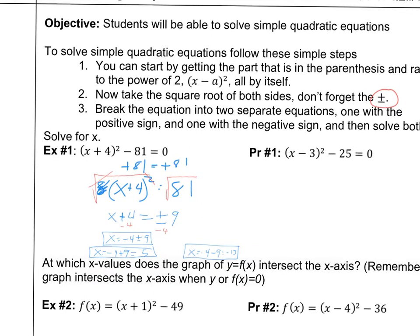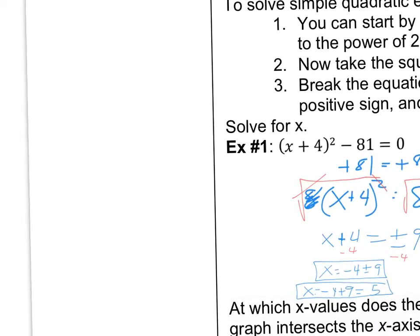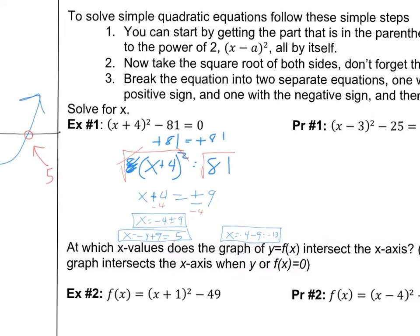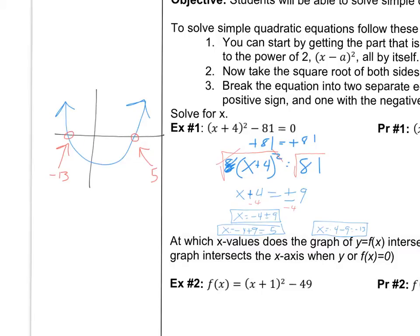And just, we'll talk about this more later, but really what this is, it's a quadratic. So when you graph it, and we're going to get to graphing later, don't worry, you don't have to do it now. But when you graph it, it's going to look something like this. And what we just did by finding the zeros or the roots, 5 and negative 13, is we found these points right here where it crosses the y equals zero line or the x axis. So for this one, this would be at negative 13 and this would be at 5. We just found those points, that's what this is.